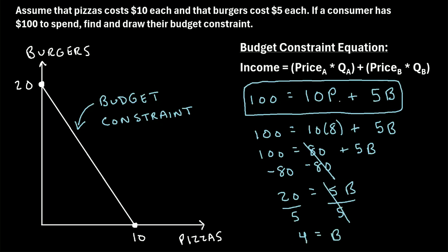We can verify this in our equation: 8 pizzas at $10 each is $80 spent on pizza, and 4 burgers at $5 each is $20 spent on burgers. 80 plus 20 equals exactly our income of $100. So that's one potential combination of the quantities of pizzas and burgers you could buy.